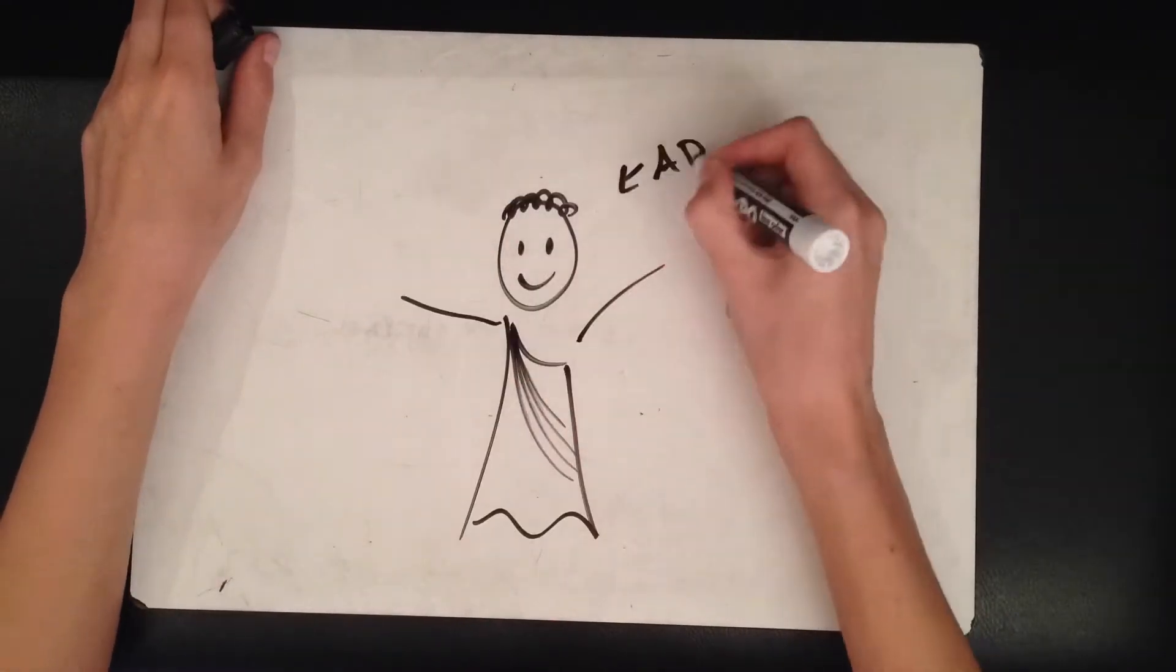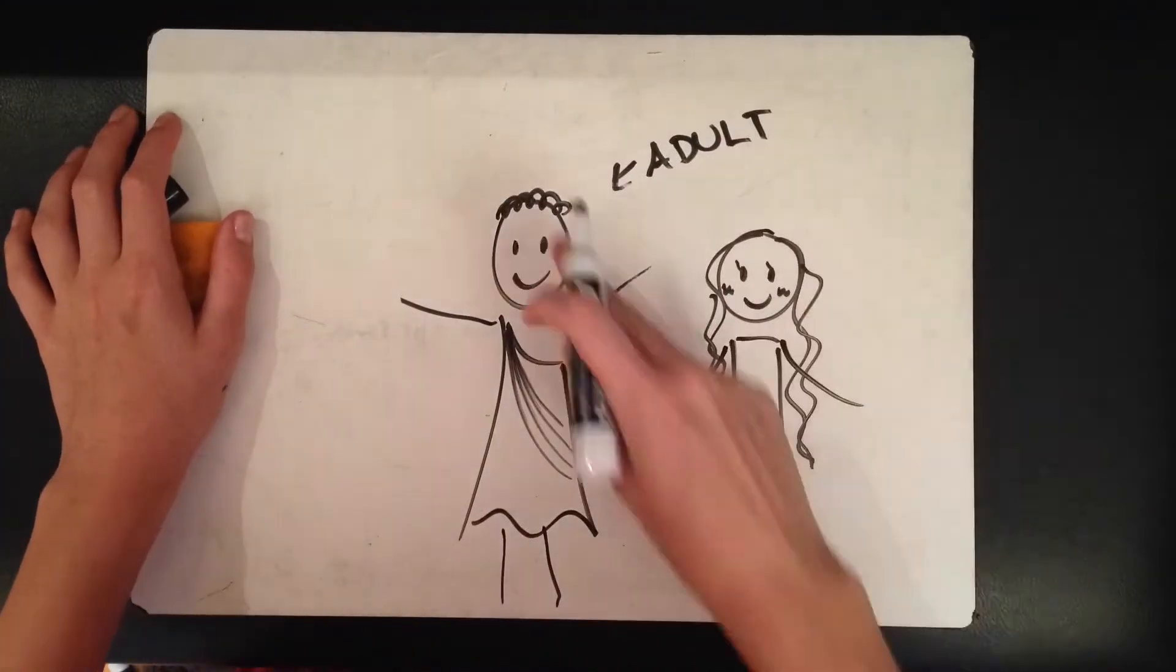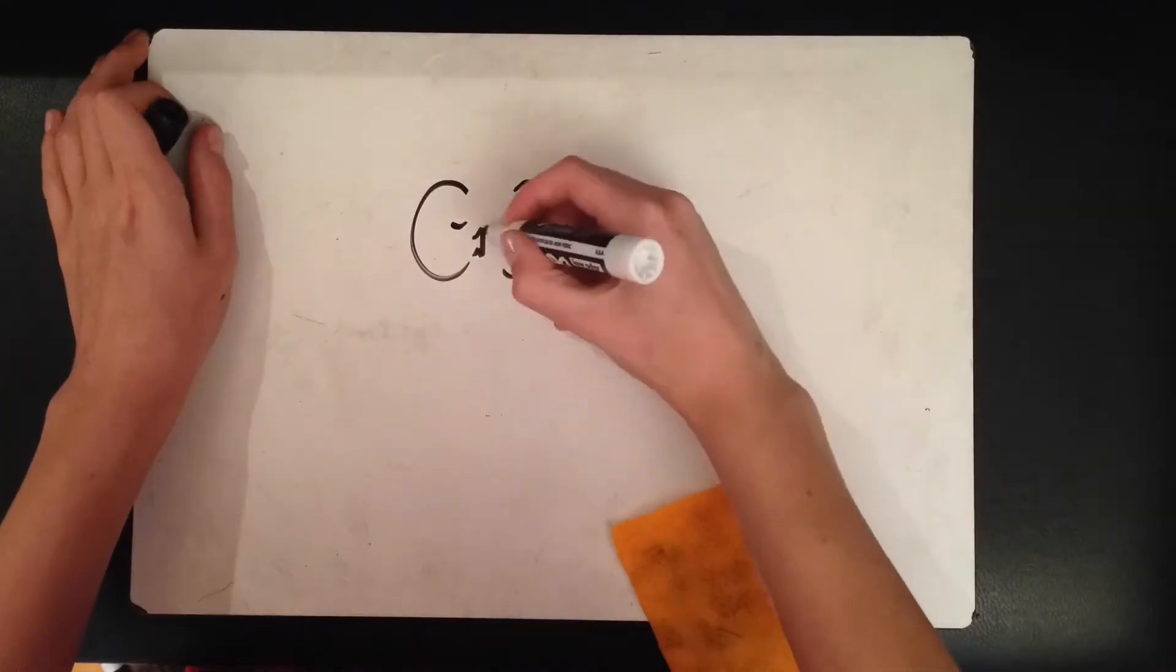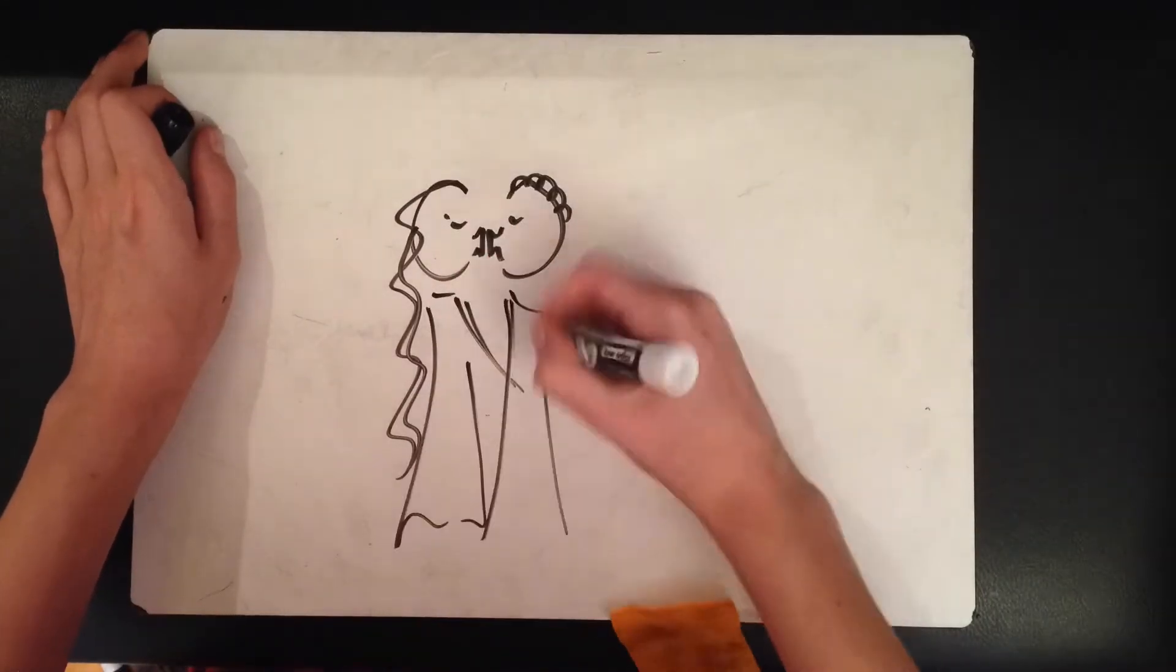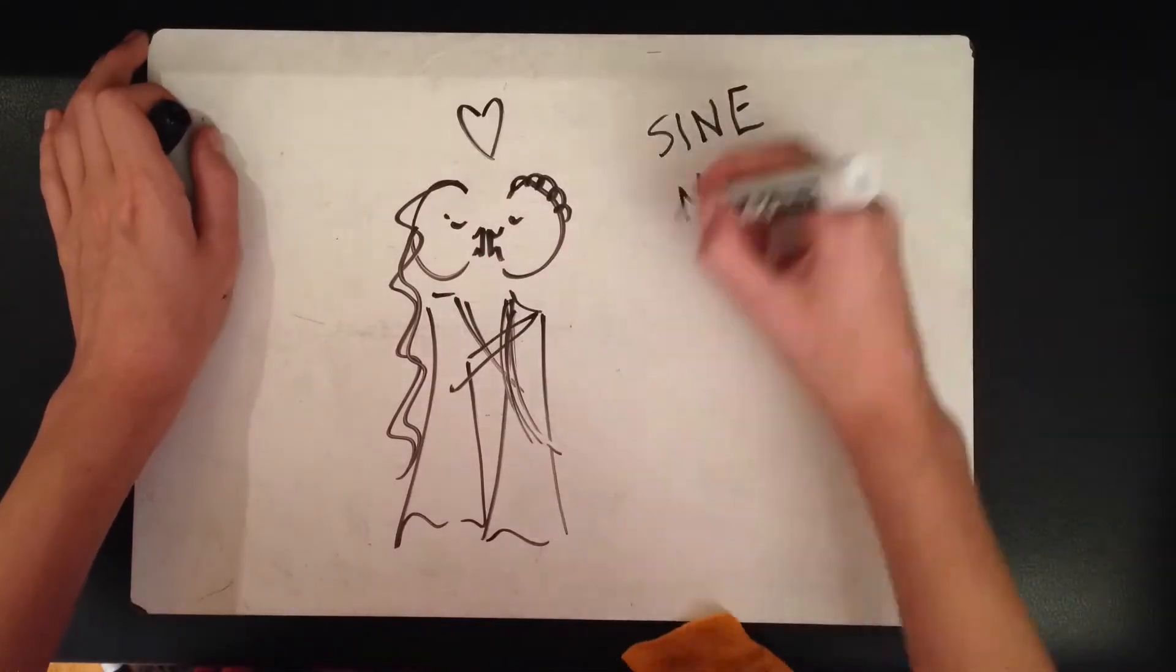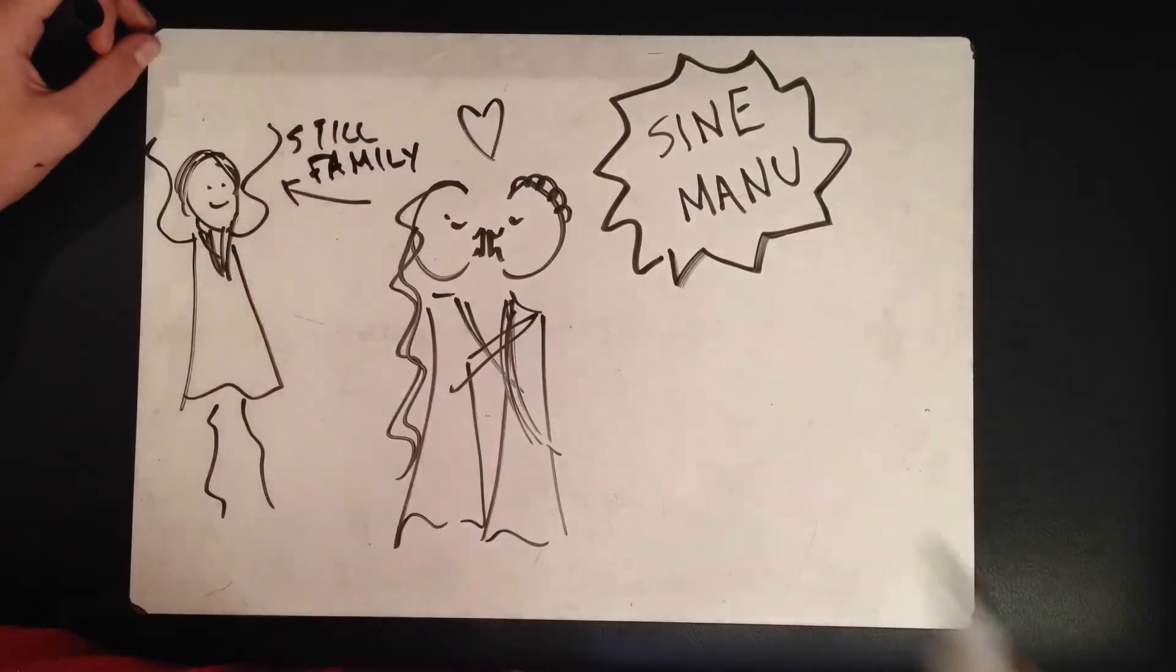When Ordinarius reaches adulthood, his parents arrange for him to marry the young daughter of another wealthy family. The ceremony takes place sine manu, so that the bride may remain a part of her father's family, without passing entirely under control of her new husband.